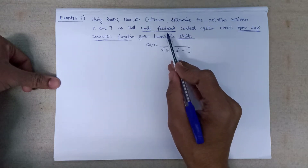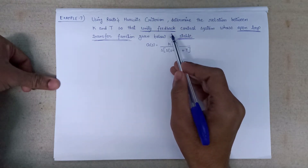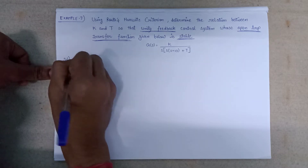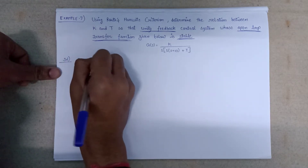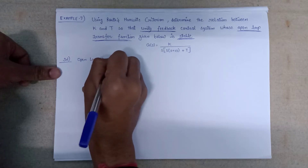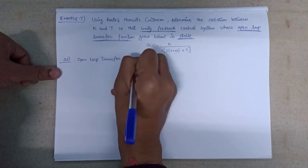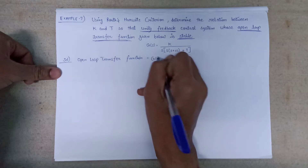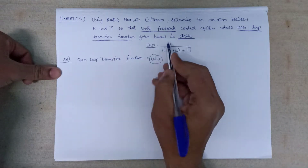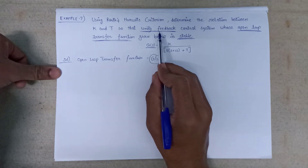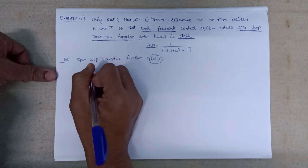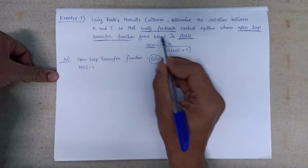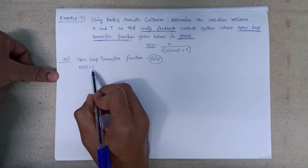There are three key points which we have to notice in this question. First of all, we are given the open loop transfer function, represented by G(s). It is also stated that this control system has unity feedback, so the value of h, that is the feedback, is equal to 1.